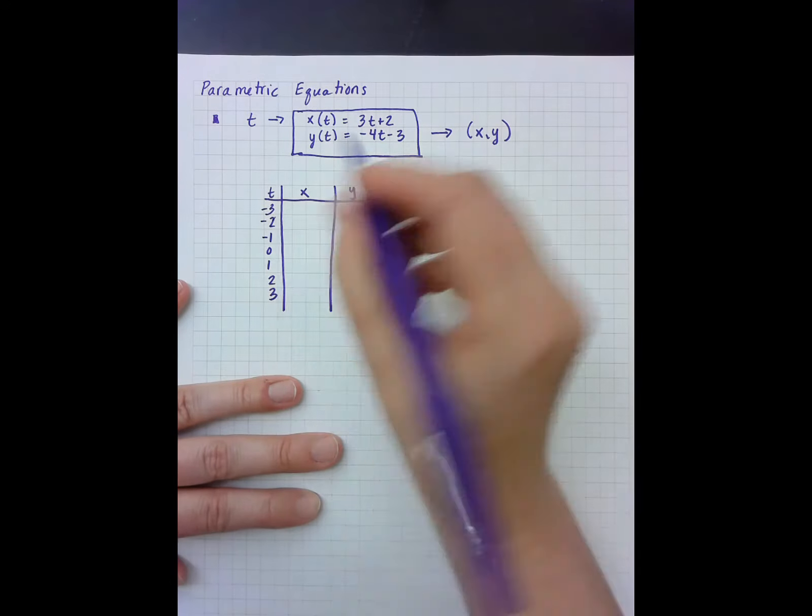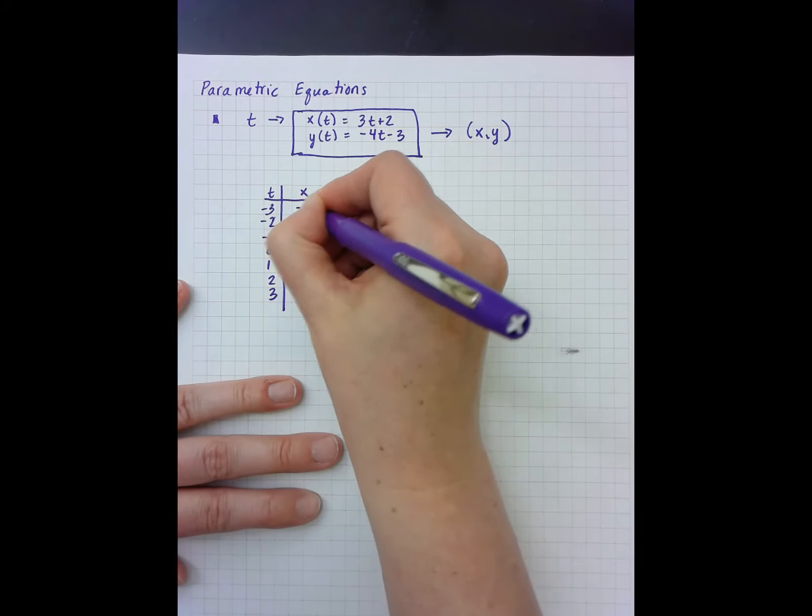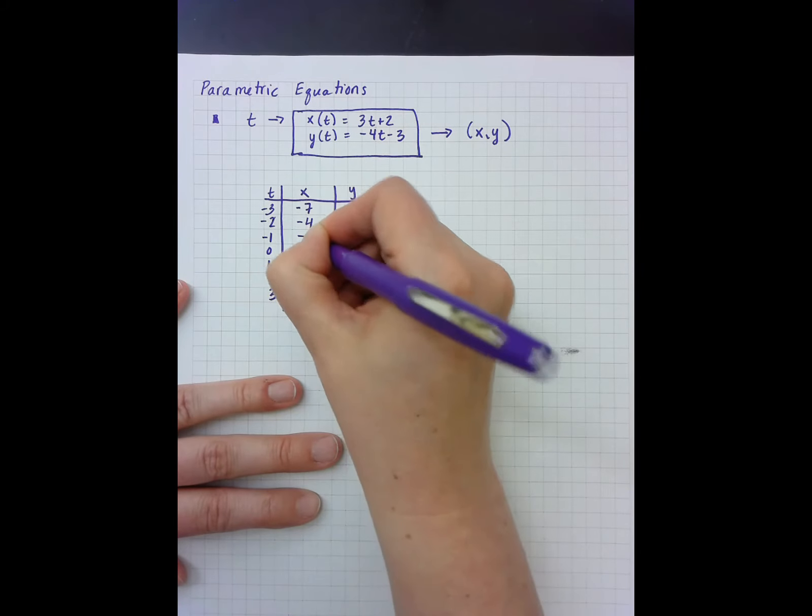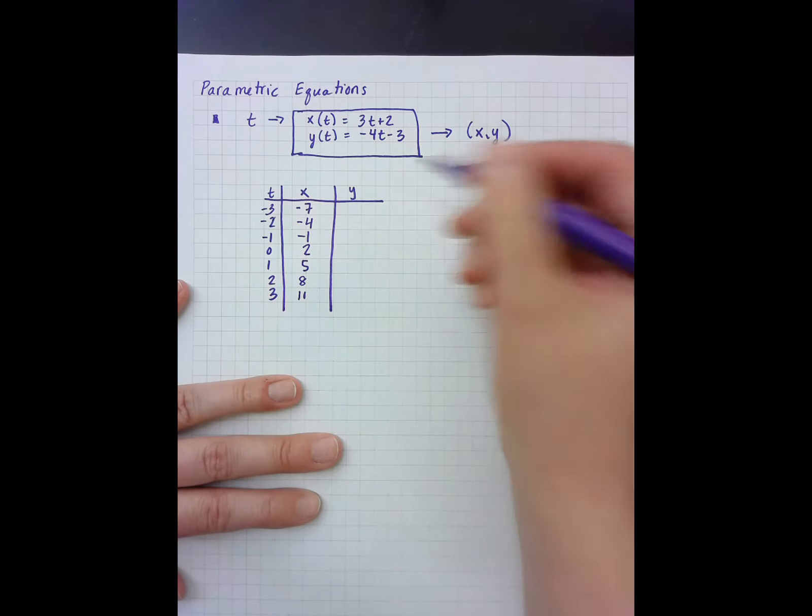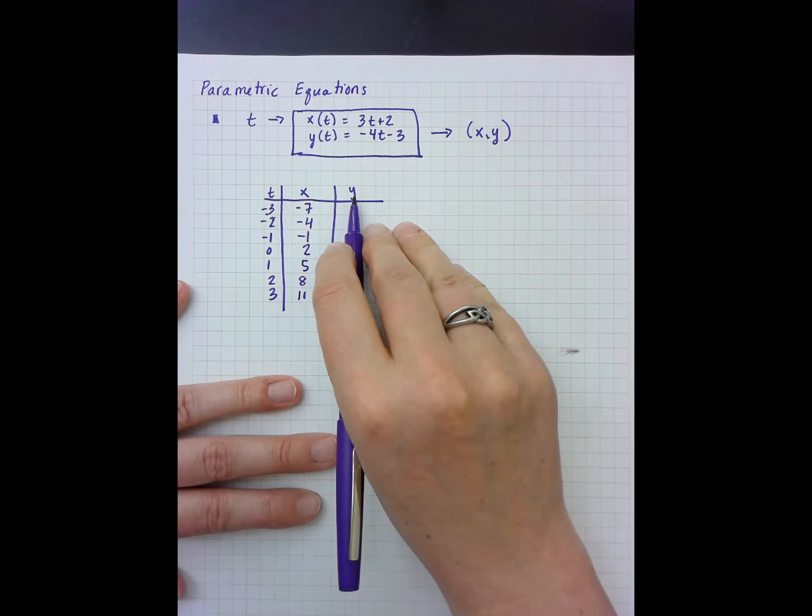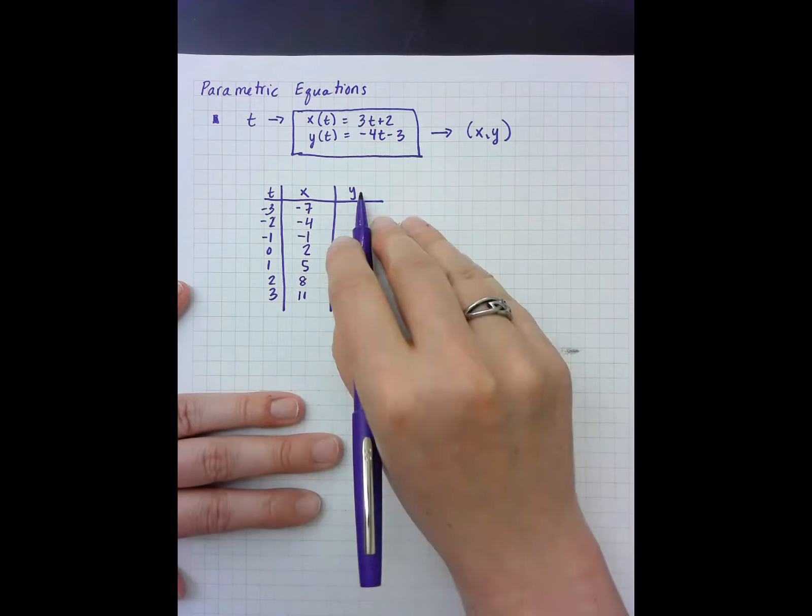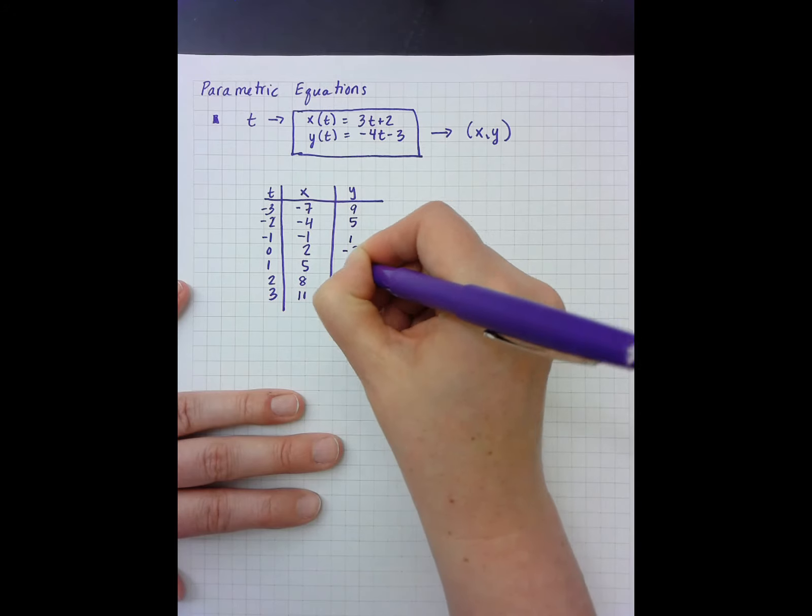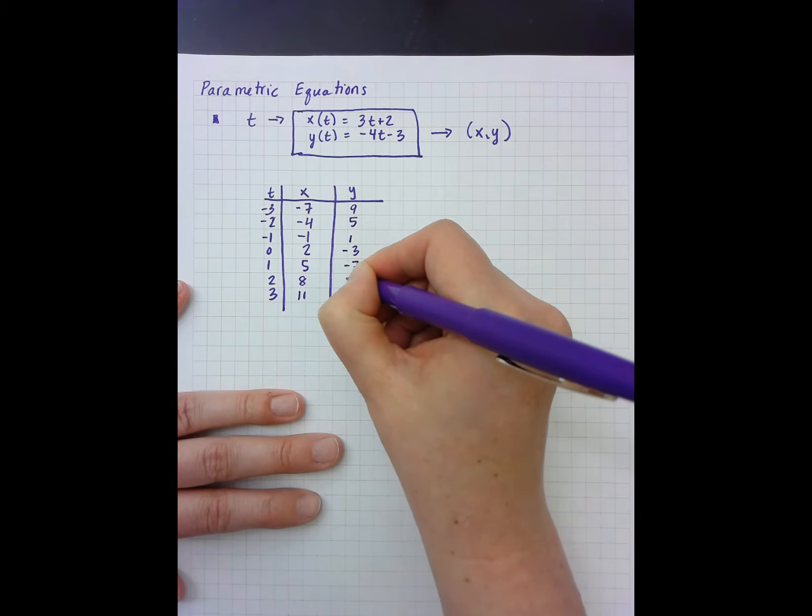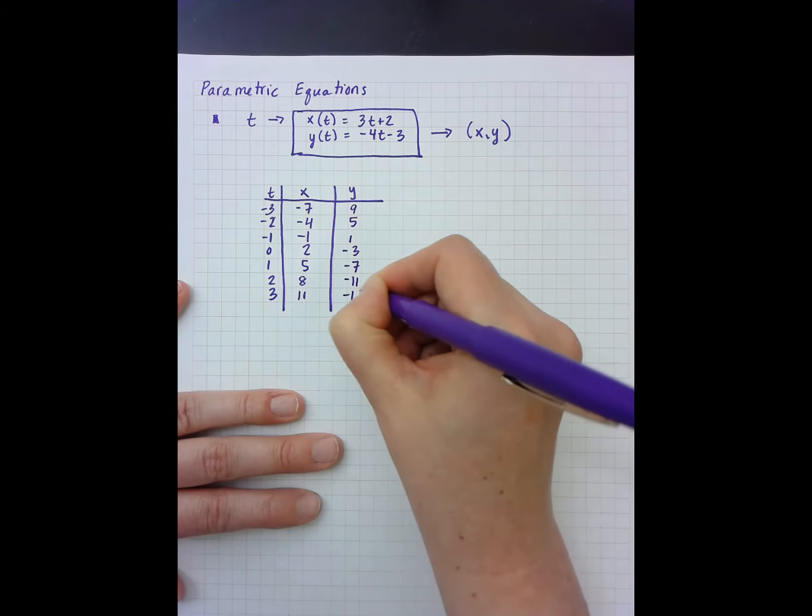Plugging in negative 3 to x gives me negative 7, negative 4, negative 1, 2, 5, 8, 11. Plugging negative 3 and so forth into the y function gives me 9, 5, 1, negative 3, negative 7, negative 11, negative 15.